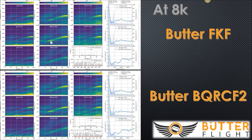This shows where throttle percentage is during the flight, and then the spikes in throttle going up and down. This section is the gyro filtering of the raw data — essentially this is the FKF filtering or the BQRC filtering acting on the raw gyro.